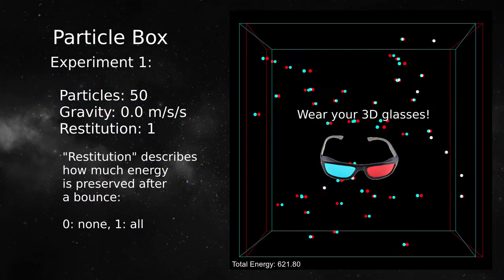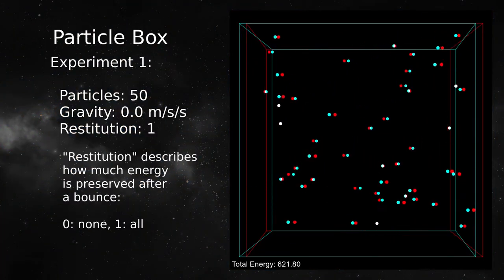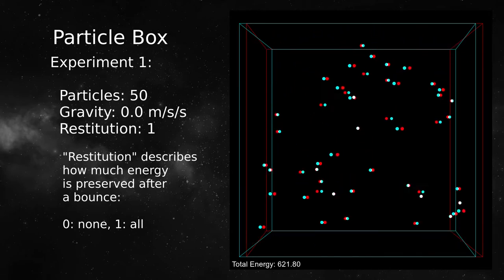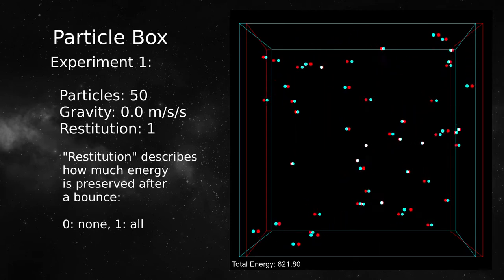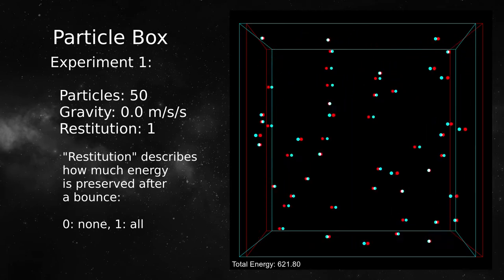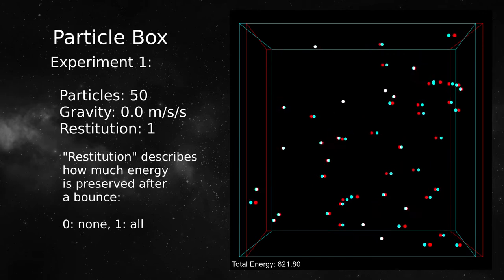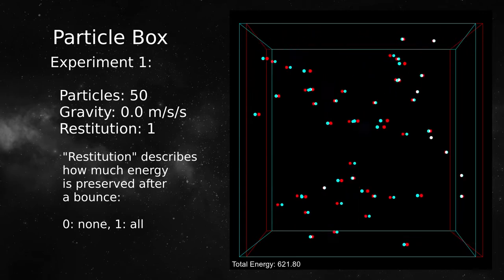In this first experiment, the particles bounce around in the box unaffected by gravity, like being out in orbit or in space. The restitution value is 1. Restitution means how much of a particle's energy is returned after a bounce. A value of 1 means no energy loss.